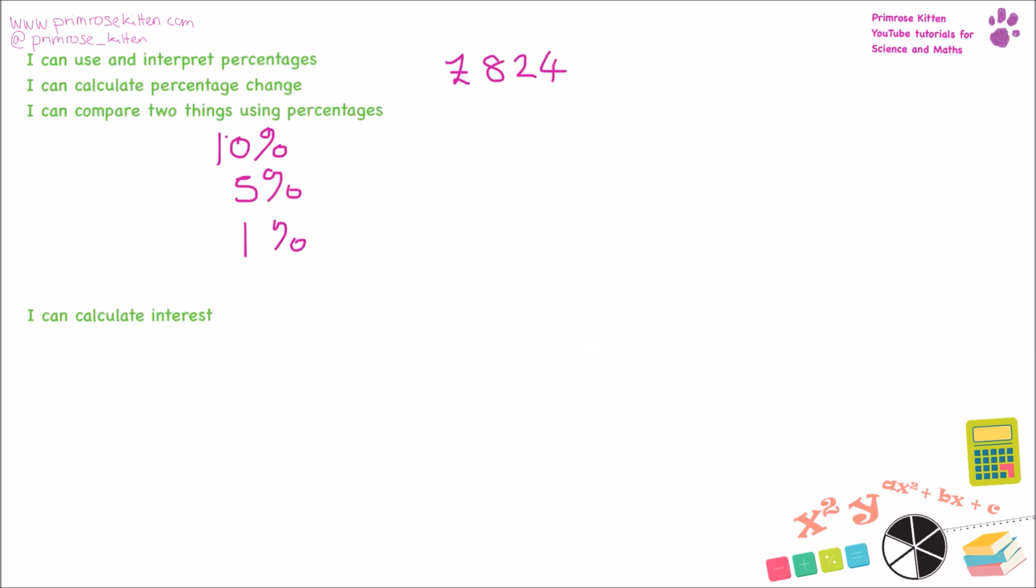Percentages can come up on the calculator or the non-calculator paper. So it's worth knowing a couple of ways to work them out. On the non-calculator paper, you can work them out by using blocks of tens, fives and ones. So 10% of 824 would be 82.4. 5% would be half of that, which would be 41.2. And then 1% of that would be 8.24. And using combinations of ten, fives and ones, you can generally make any number that you like.